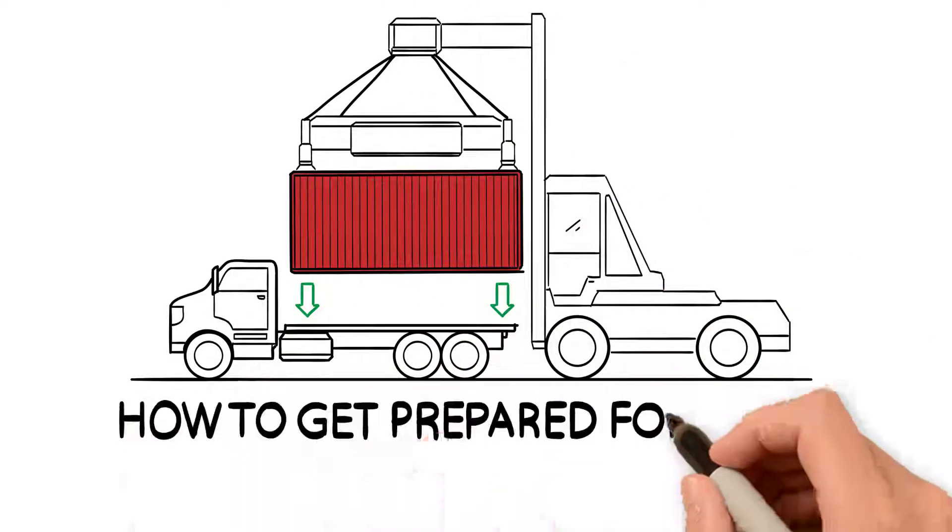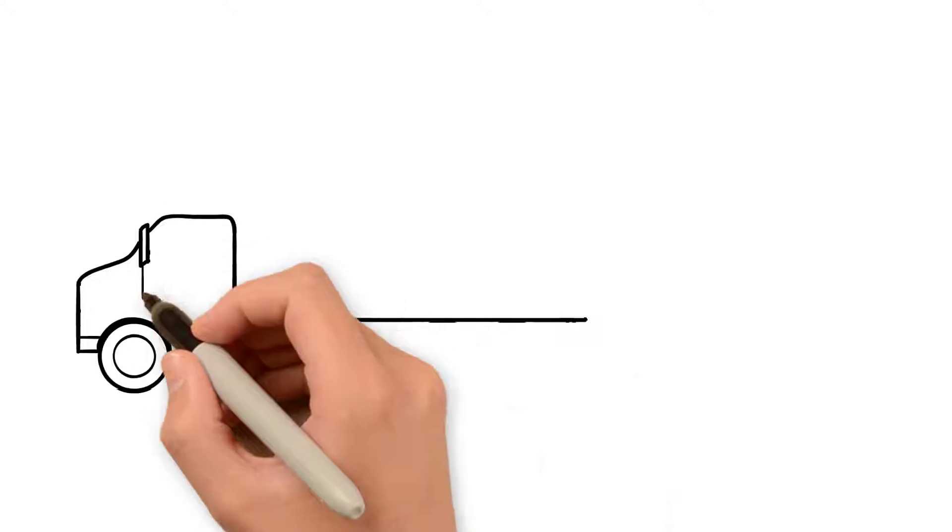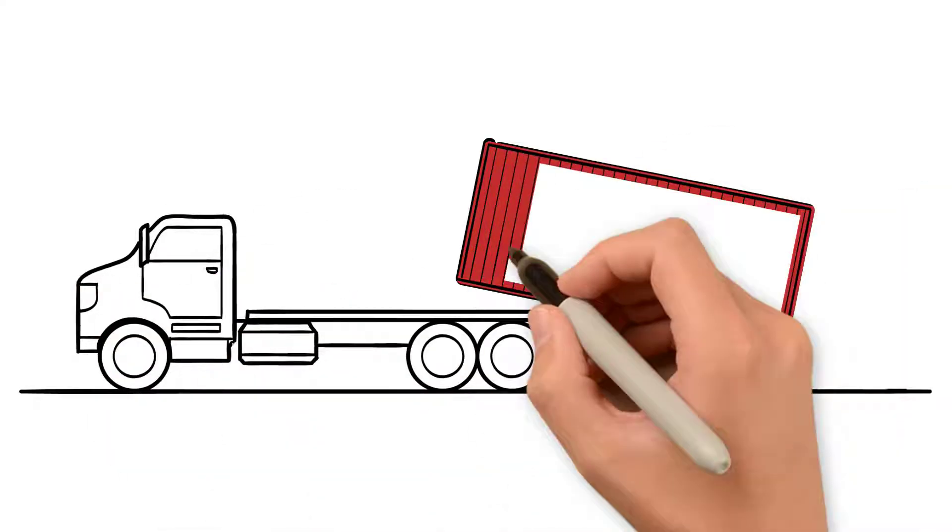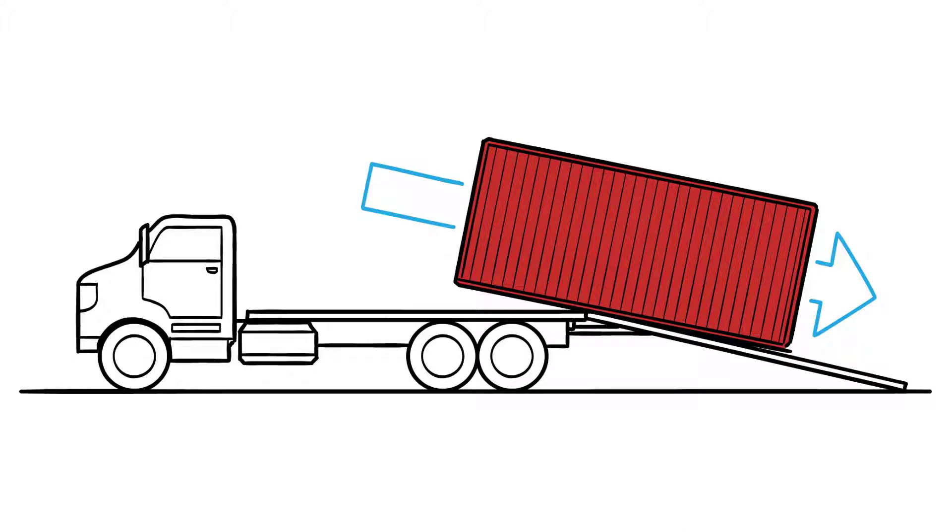How to get prepared for your container delivery. Shipping containers, in most cases, are delivered on tilt-bed-style trucks. These trucks slide the container off the rear of the trailer, and the container is set on the ground in your chosen location.